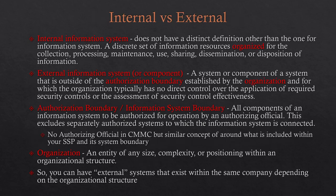There is no separate definition for an internal information system — it's implied from the information system definition. External information systems or components are things outside your authorization boundary. In CMMC terminology, your accreditation boundary is what's covered by your CMMC certification. If you're connecting to separately authorized systems, those systems will have their own CMMC certifications, or be FedRAMP equivalent or FedRAMP Moderate if they're a cloud system.